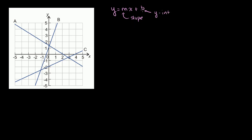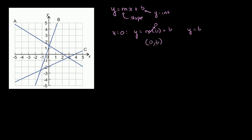It's pretty easy to verify that b is the y-intercept. The way you verify that is you substitute x is equal to 0 — that's where we're going to intercept the y-axis. If x is equal to 0, this equation becomes y is equal to m times 0 plus b. m times 0 is just 0, so y is going to be equal to b.